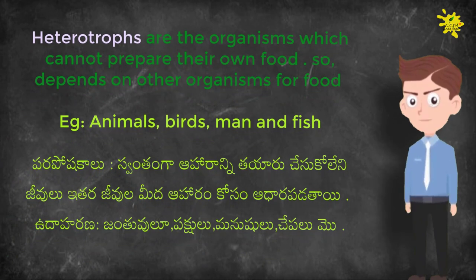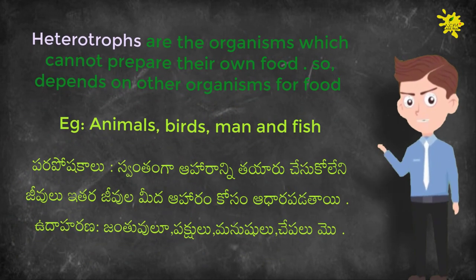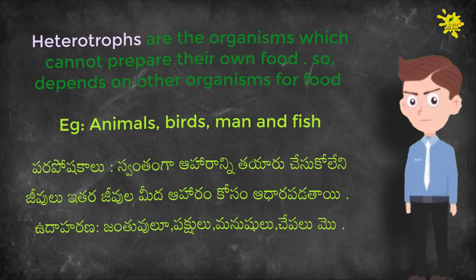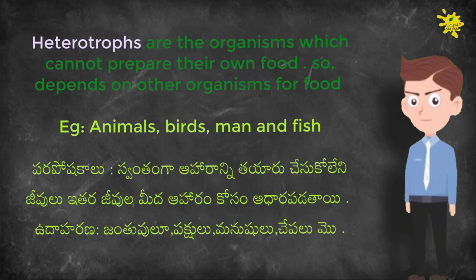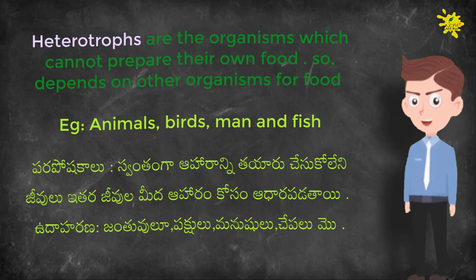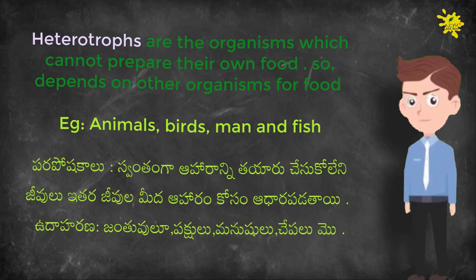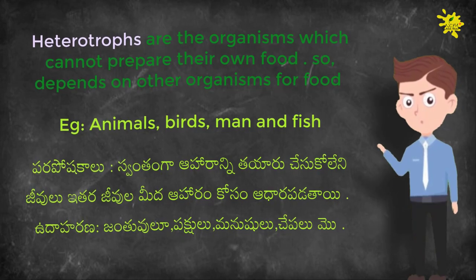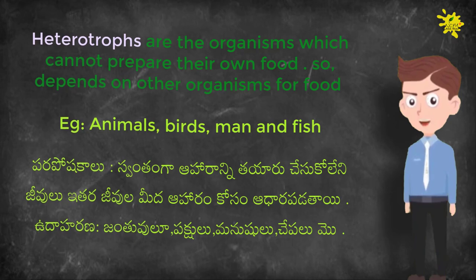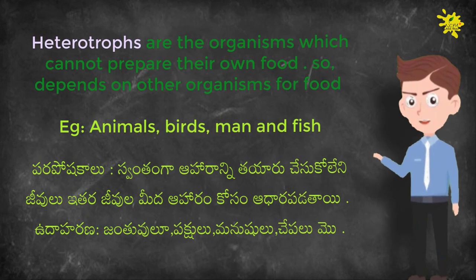Now let us see what are heterotrophs. Heterotrophs are the organisms which can't prepare their own food, so they depend on other organisms for food. For example, animals, birds, man, and fish.